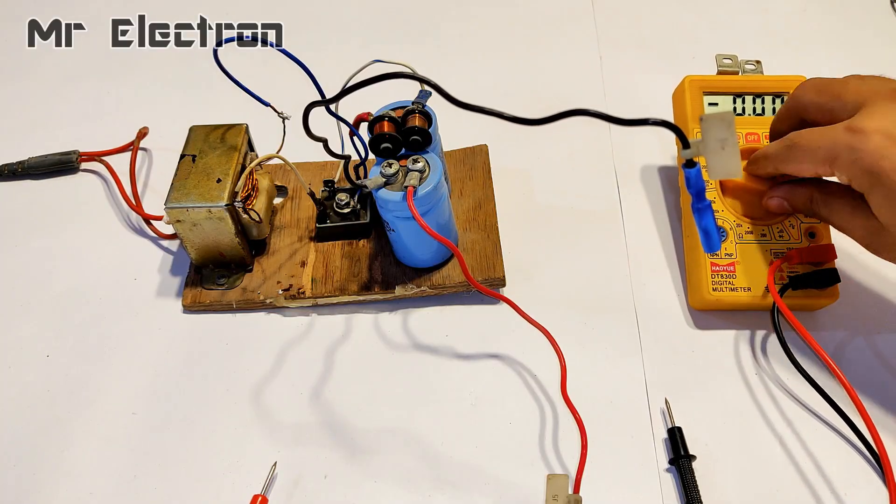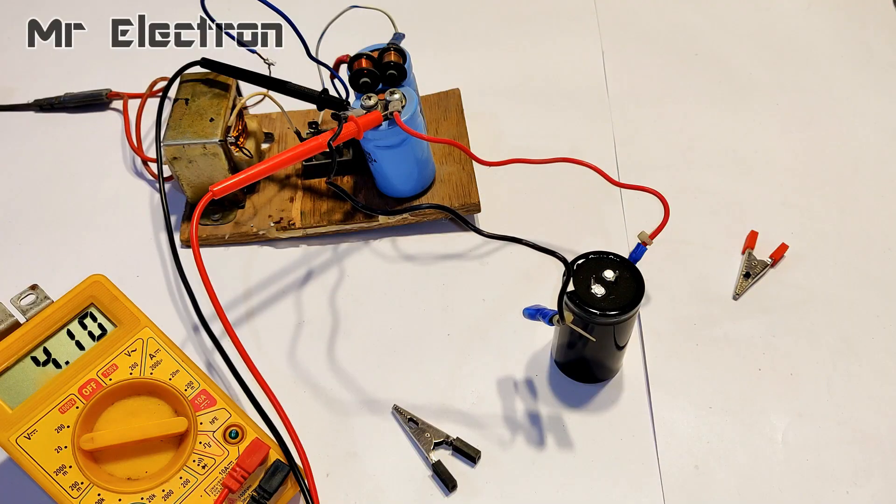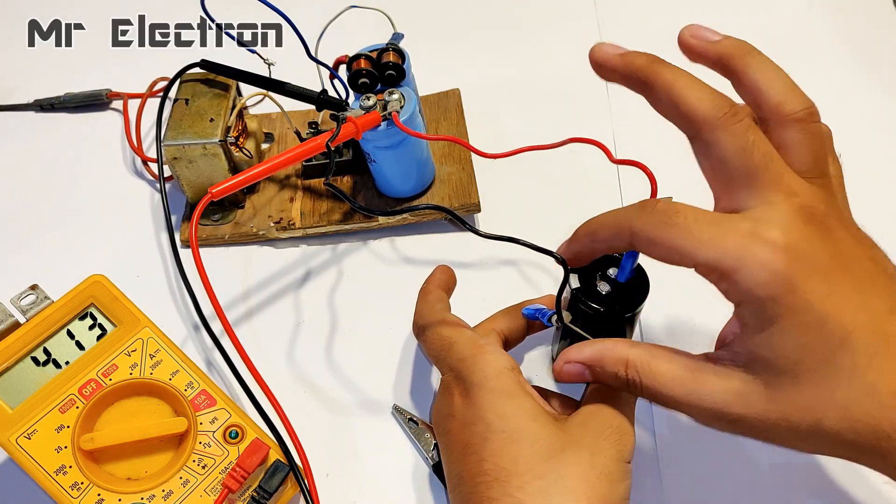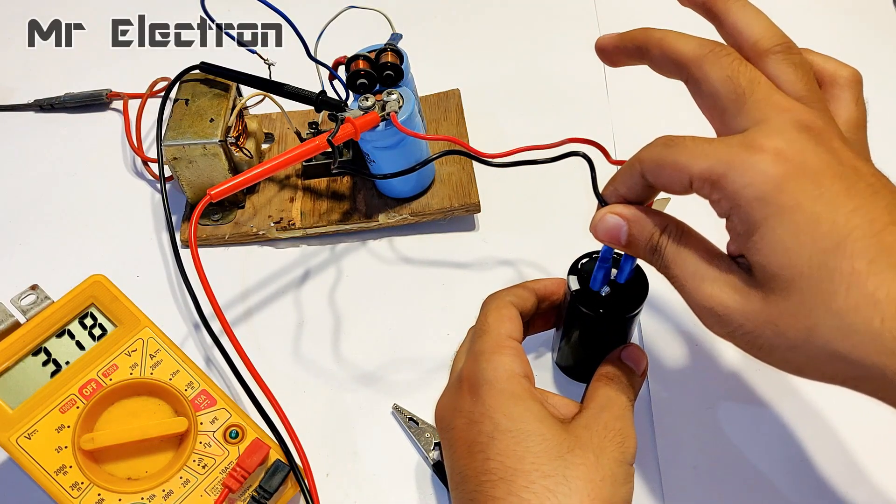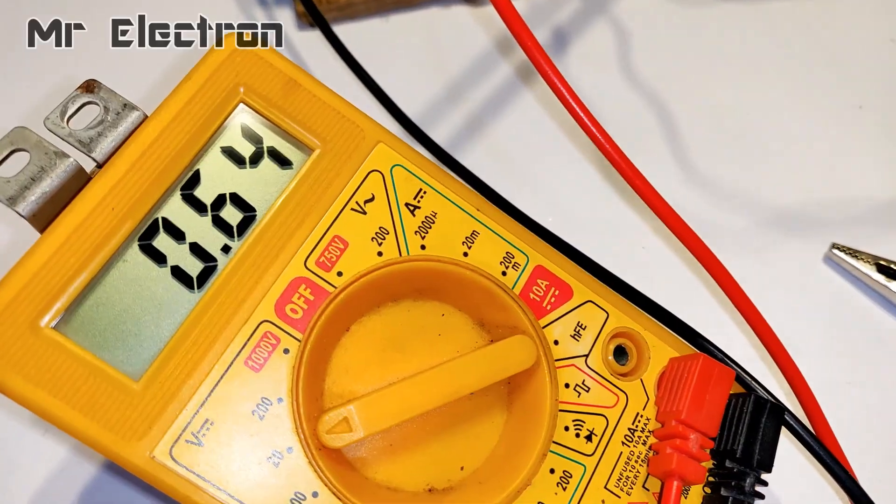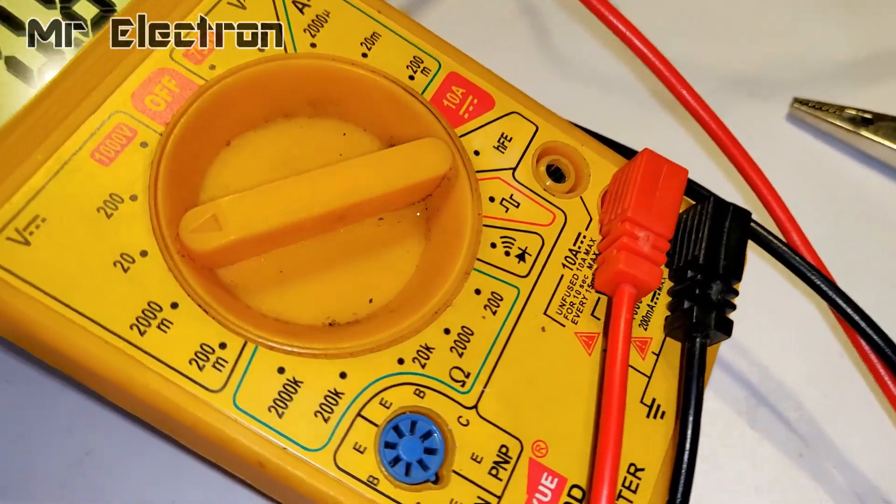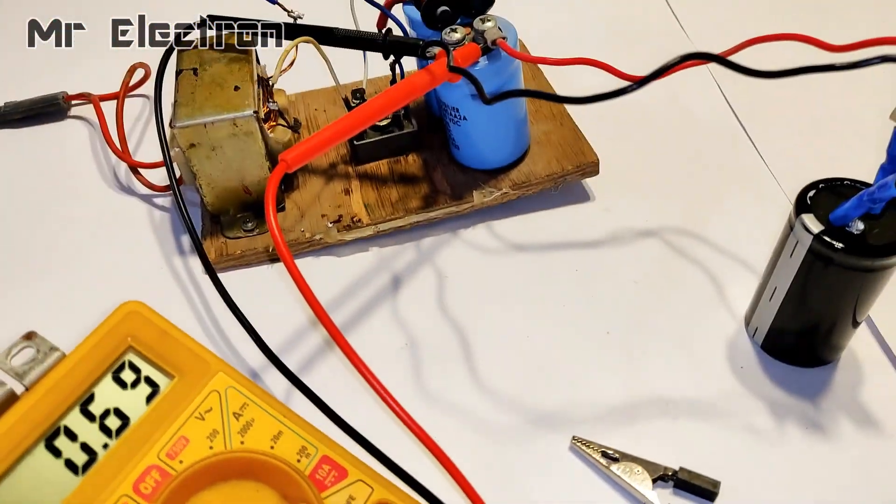So it is time to connect the terminals to the supercapacitor and it is really important that the red wire is connected to the positive and black wire is connected to the negative. As you can see that the voltage at present is only 0.69V and increasing.